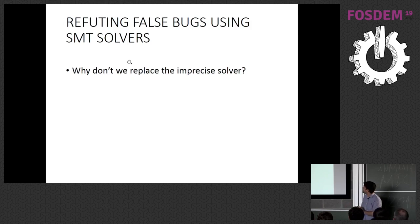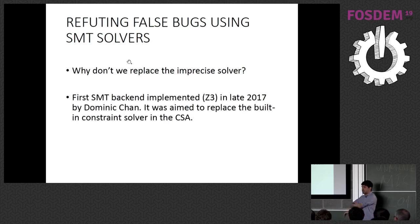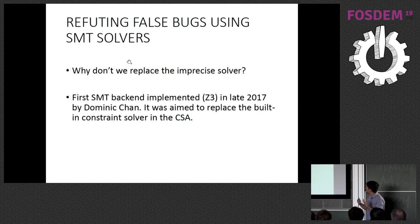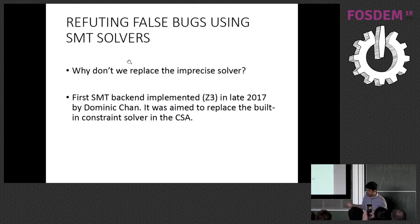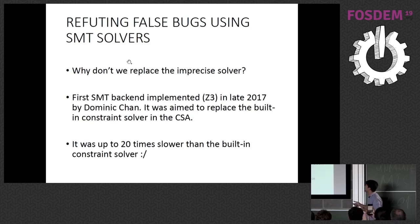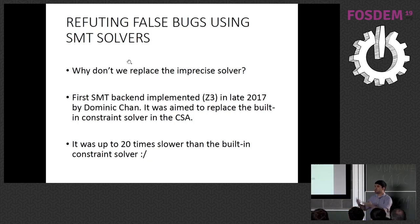That was actually done in 2017 by Dominic Chang. He used Z3, an open-source SMT solver from Microsoft. It's full precision — you encode everything using SMT theories and analyze your project. The problem is it was up to 20 times slower than the original constraint solver, which defeats the initial idea of producing results the user actually wants to use.